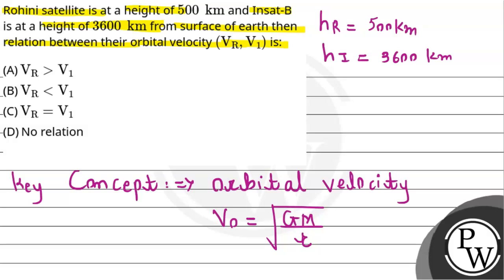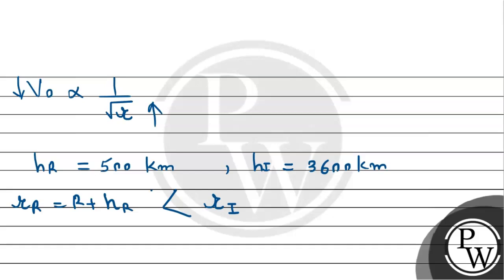So we can clearly get to know that the orbital velocity for the Rohini becomes greater than the orbital velocity of I, and this is going to be the required answer of this question as option A.